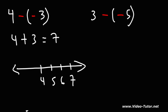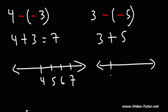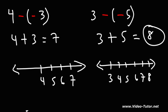Now for the other example, we have 3 minus negative 5. Since we have two negative signs, we can change that to a plus, so this is the same as 3 plus 5. Using the number line, we start from 3 and add 5, traveling five units to the right — 1, 2, 3, 4, 5 — landing on 8. So 3 plus 5 is 8.